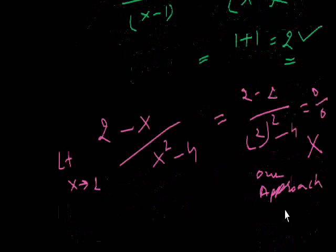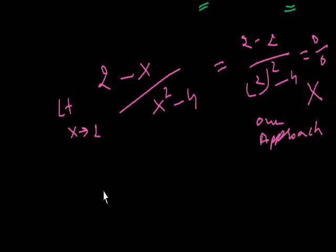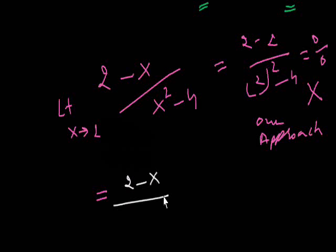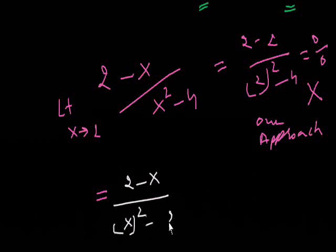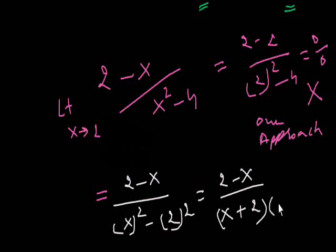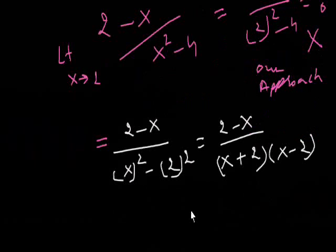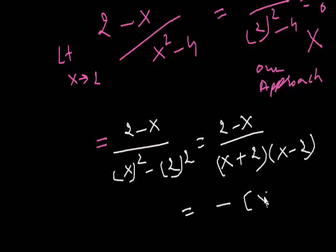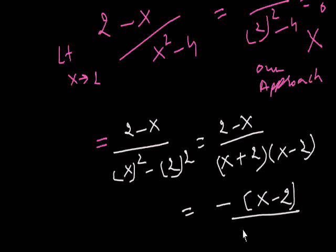This 2-x. This is a². This is 2². Now a²-b² formula will apply: (a+b)(a-b). So this will be minus common, (x-2)(x+2)/(x-2). This will be cut.